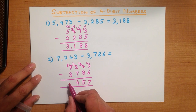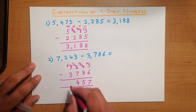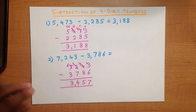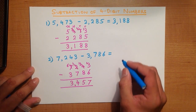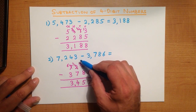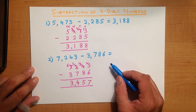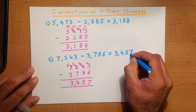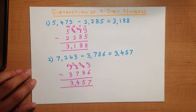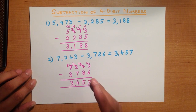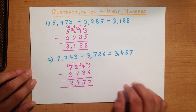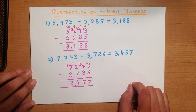And lastly, we do the thousands column. We've got 6 minus 3, which is 3. Let's put a little comma here. So 7,243 minus 3,786 is 3,457. Just remember the format we use: write the numbers in nice neat columns. If the top number is smaller than the number below, take 1 from the left. If it is not smaller, you do not have to. That is subtraction of 4-digit numbers.